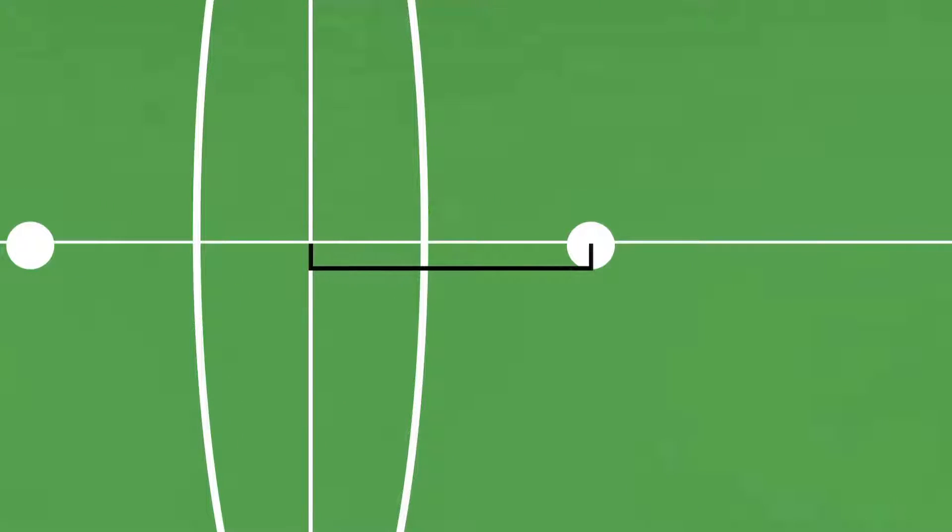The focal point is where all the light converges, and its distance from the center of the lens, along the principal axis, is called the focal length.